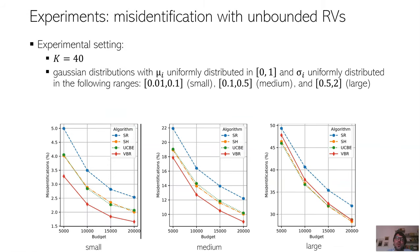So we also considered unbounded random variables. In particular, Gaussian distributions in the interval 0-1 with small, medium, and large variances. And in the first two cases, VBR is still the best approach in accuracy. Whereas with large variances, VBR is barely dominated by UCB and SH, but the difference is very, very small.